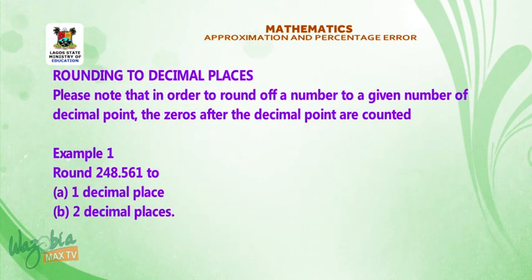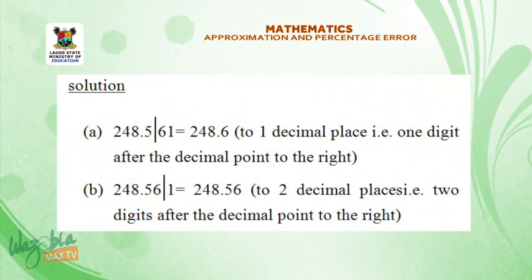Rounding to decimal places. Please note that, in order to round off a number to a given number of decimal point, the zeros after the decimal point are counted. Example 1. Round 248.561 to a, 1 decimal place, b, 2 decimal places. Solution A, 248.561 is equal to 248.6 to 1 decimal place. That is 1 digit after the decimal point to the right.